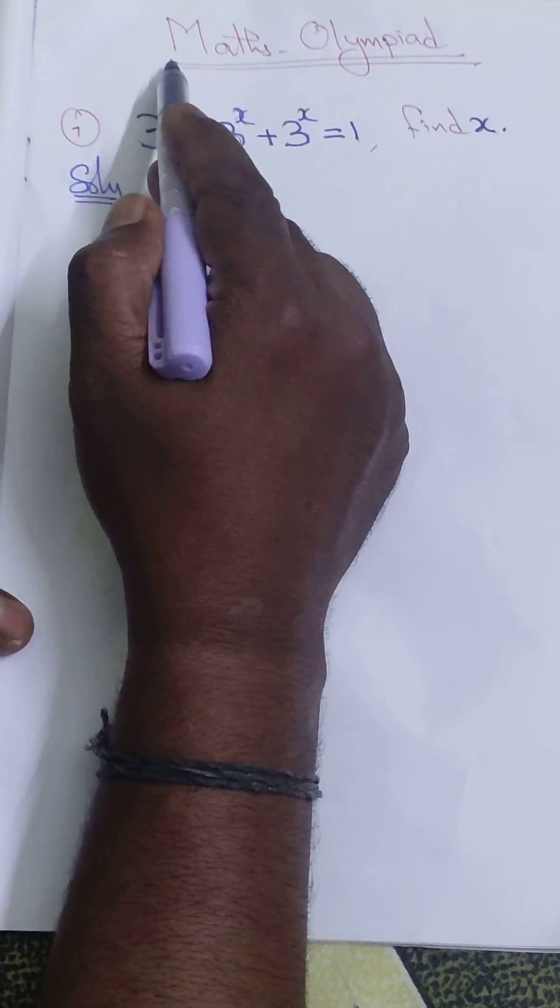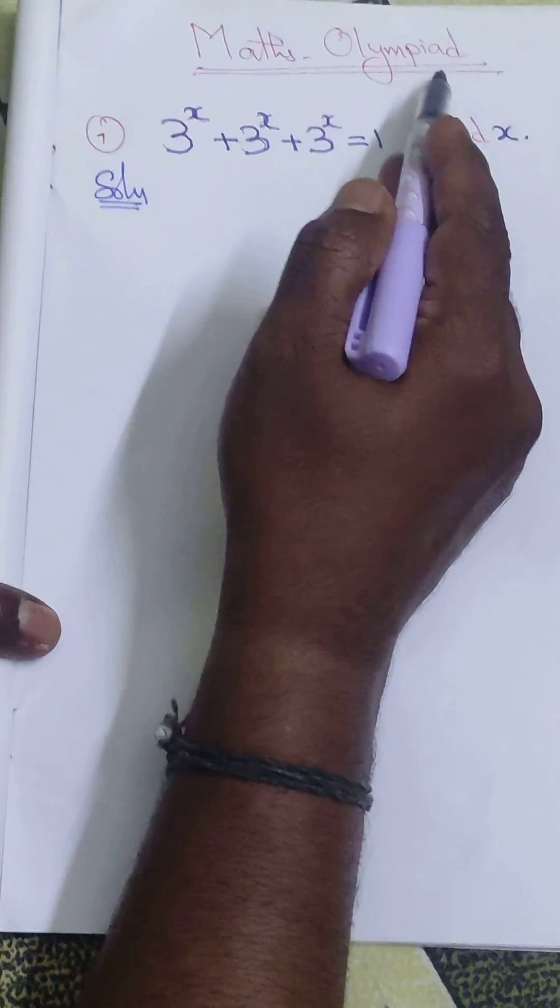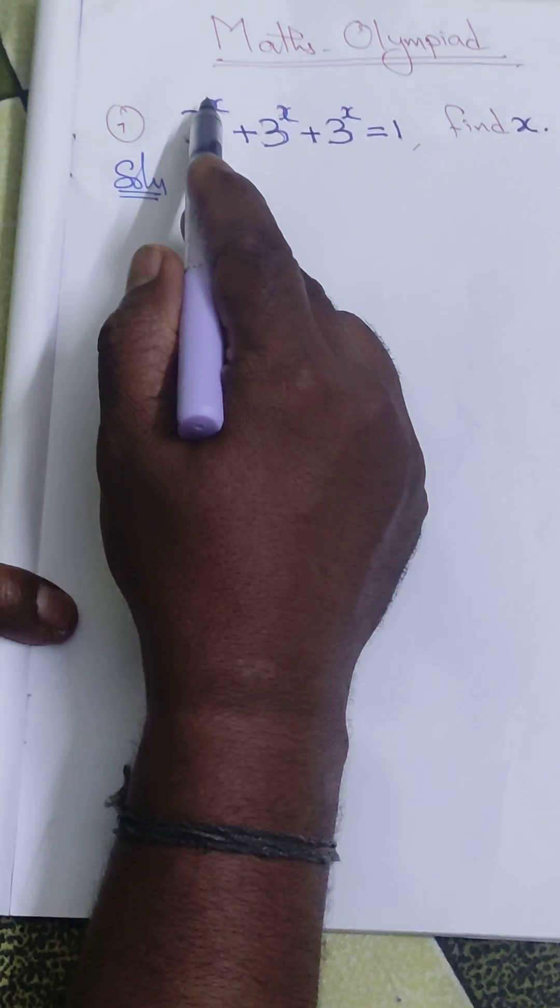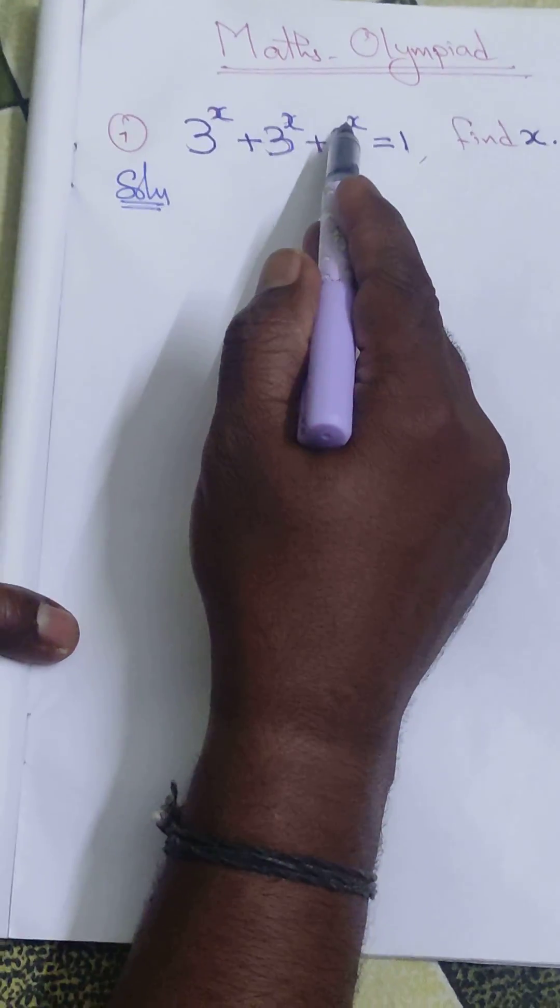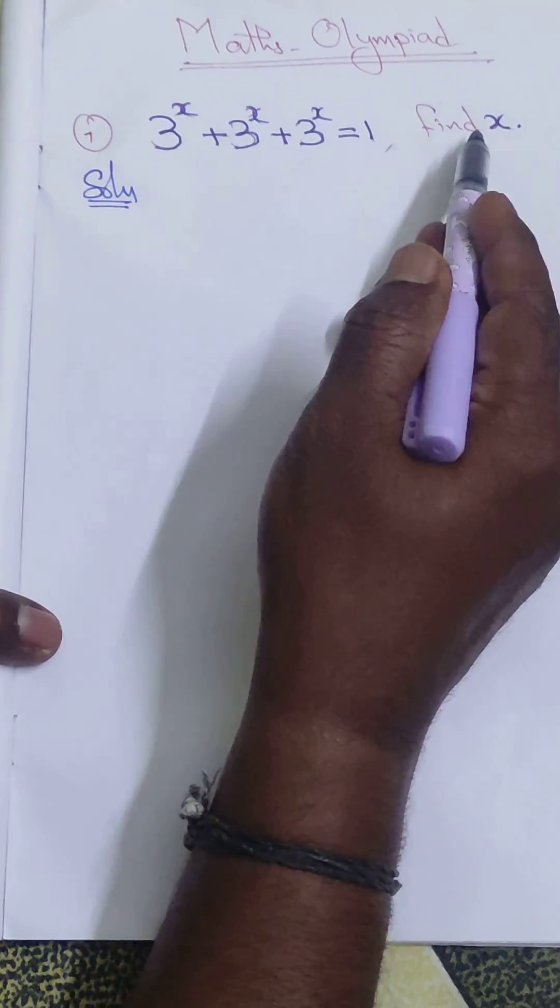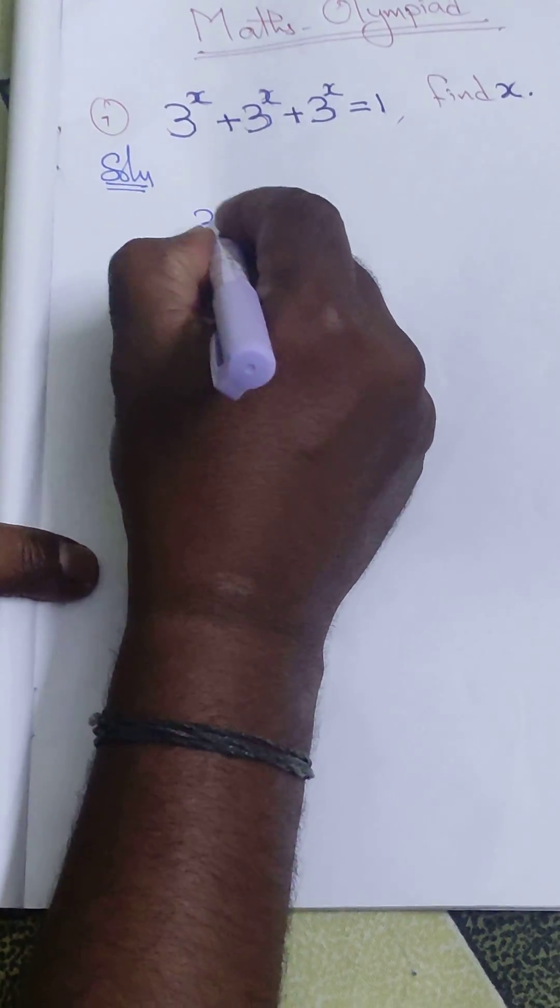Okay, good morning. Today we can see in the Maths Olympiad problem: 3^x + 3^x + 3^x = 1. We have to find the value of x. Here, first we can write 3^x + 3^x + 3^x = 1.